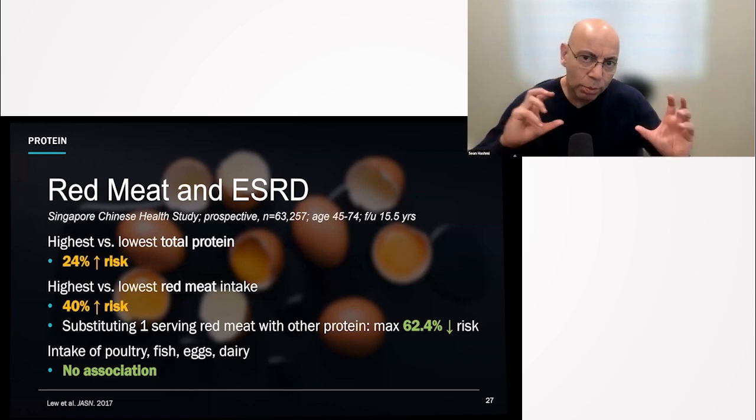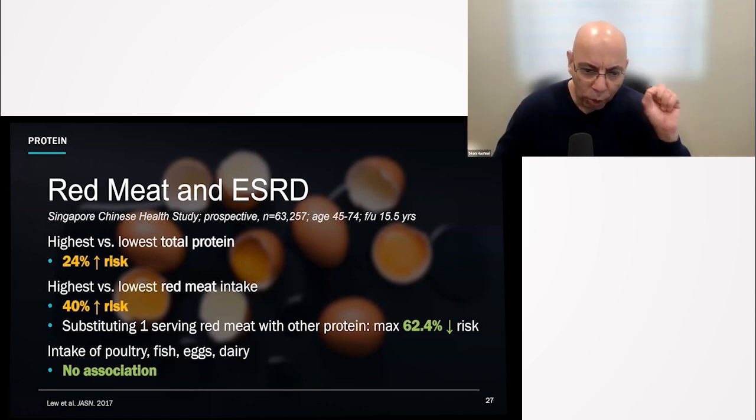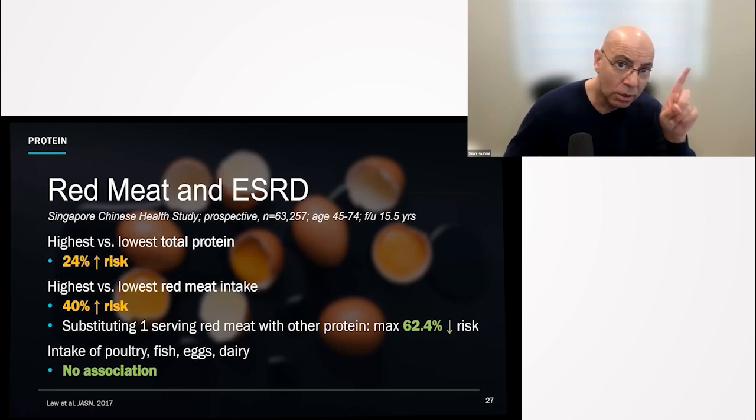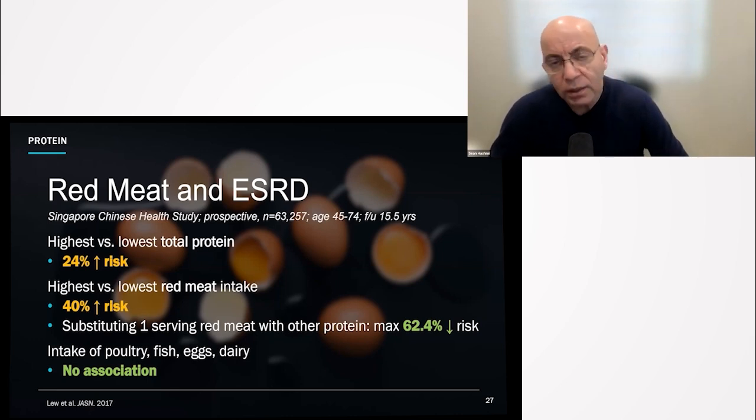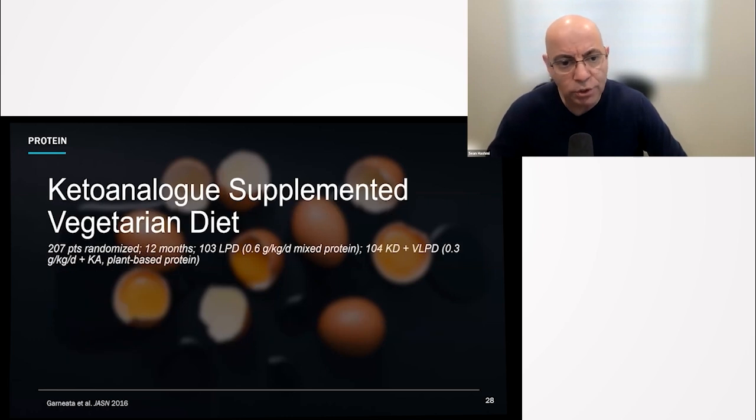And when it comes to protein types, poultry, fish, eggs, and dairy are neutral. The data does not support that they harm or help as far as making the kidneys get worse faster. The issue with dairy, of course, there's concerns about phosphorus, there's concerns about IGF-1, there's other things such as Neu5GC and so forth, topics for another conversation.